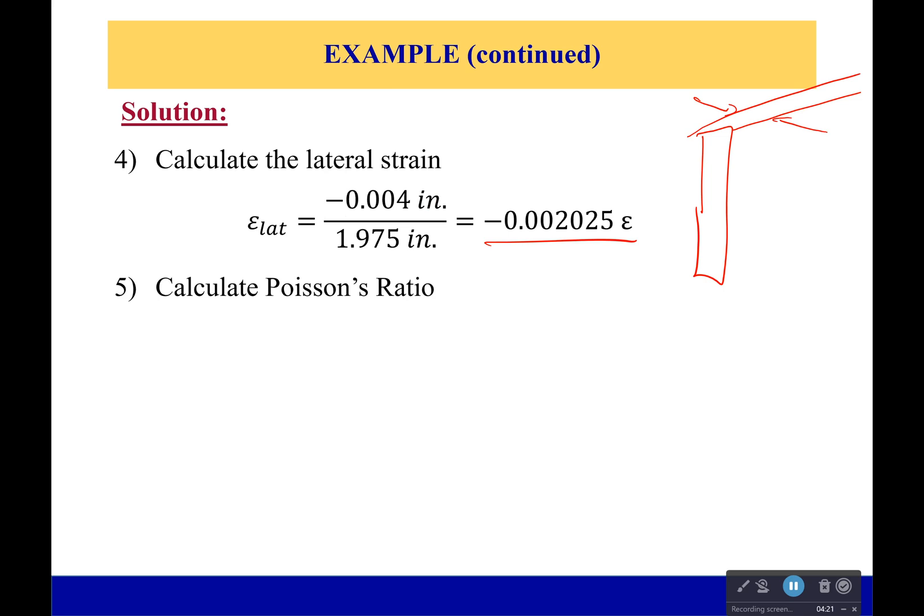So now we calculate Poisson's ratio. So negative of the lateral strain over the longitudinal strain. Strains cancel, and what you see is that Poisson's ratio is just a ratio. It has no units. If you somehow magically have units at the end, something has gone terribly wrong. It comes out to be 0.352. Well, that is less than 0.5, so we're good.